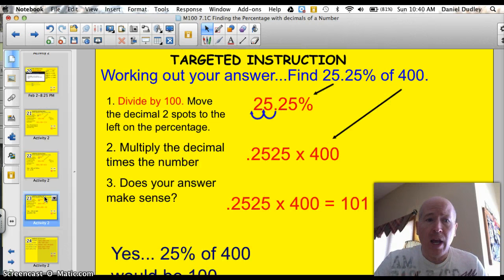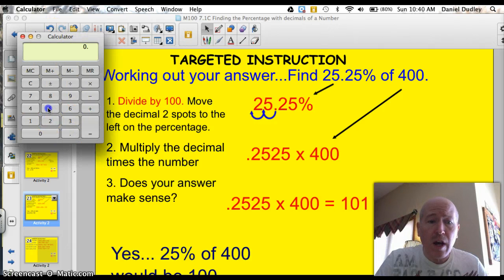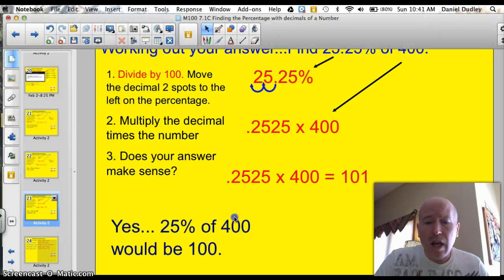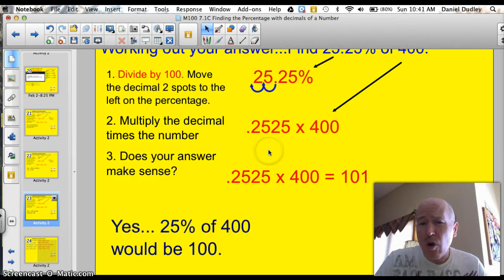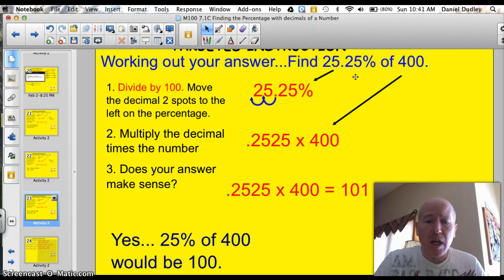Let's try working one more problem together before I have you work some on your own. We need to find 25.25% of 400. Step one, write down that number, 25.25%. Divide by 100. Move the decimal two spots to the left. So you get .2525 and multiply that by 400. Same thing with the calculator, .2525 times 400 equals 101. Does that answer make sense? Well, yeah. 25% of 400 would be 100. And so we're just a little bit more than 25%. So yes, my answer makes sense.